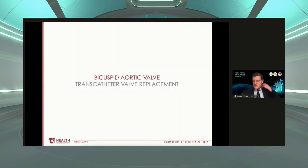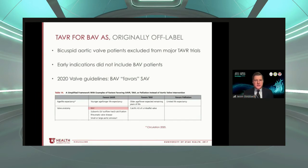Moving on to transcatheter aortic valve replacement — what is the role for TAVR in bicuspid patients? Originally this was off-label. The original large trials — the PARTNER trial and the CERT-TAVI trial — excluded bicuspid aortic valve patients. So the major TAVR series do not include bicuspid patients, and early indications did not include bicuspid valve patients.